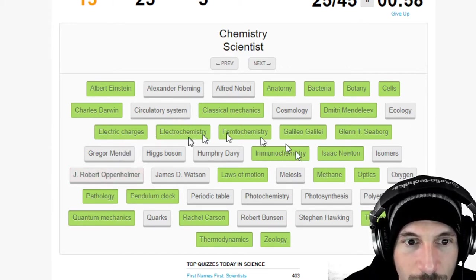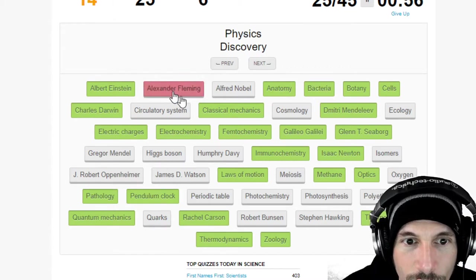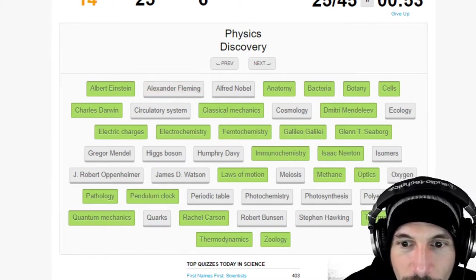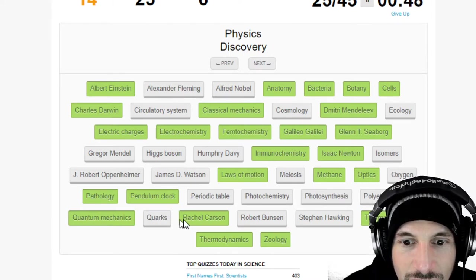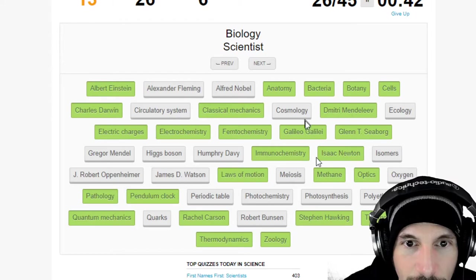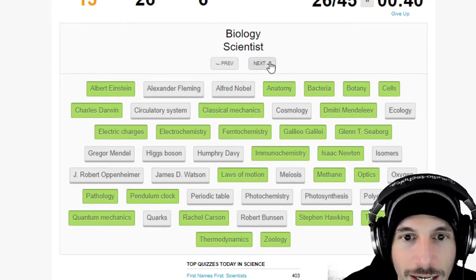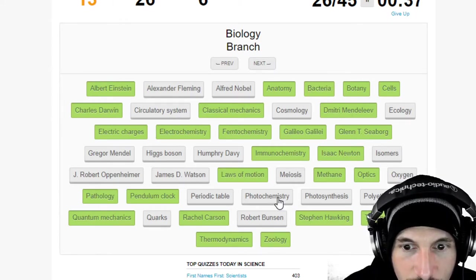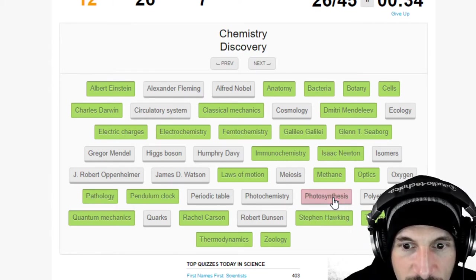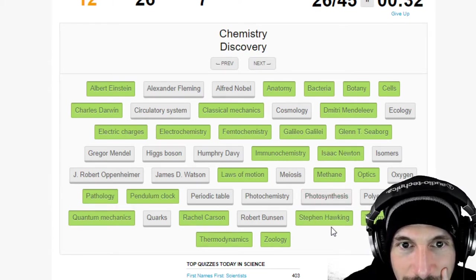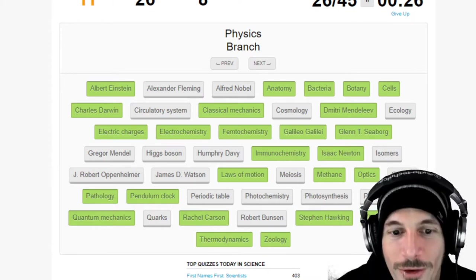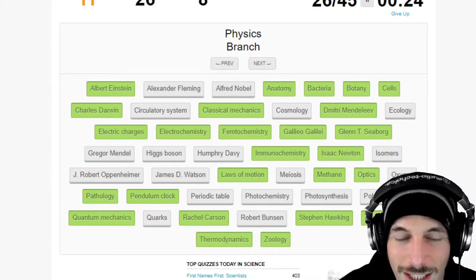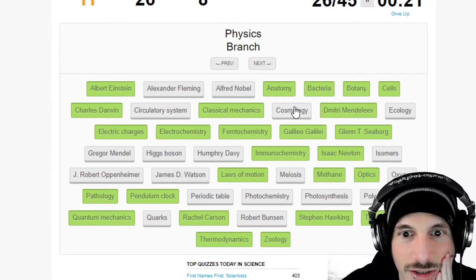I don't know. Chemistry scientist, no I already did that didn't I? Physics discovery, okay physics. Skip, skip, we don't have too much time left. Physics scientist Stephen Hawking. Biology scientist, oh my god I don't know who these scientists. Biology branch, biology branch, photochemistry, no that's not. Photosynthesis, no no, why would I click on that? Chemistry discovery, no.